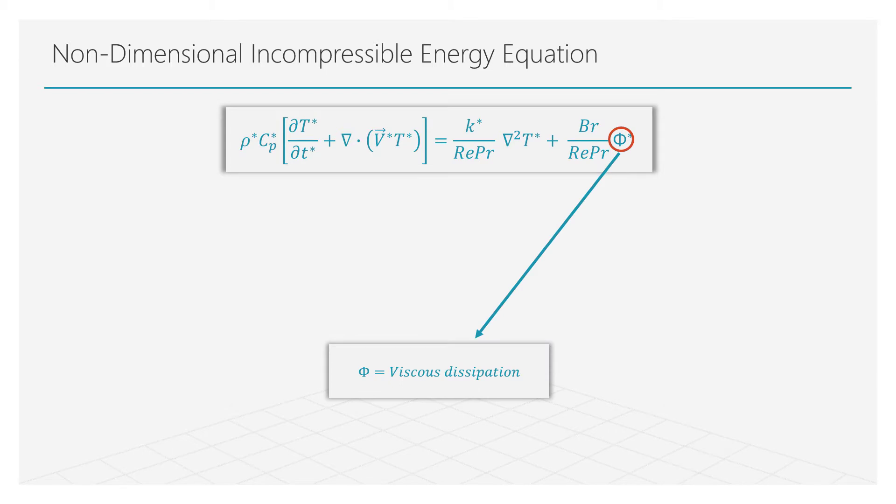Also, we have this new phi term that is representing the viscous dissipation. So, let's analyze what these new derived groups are.